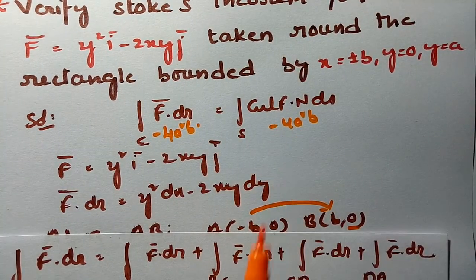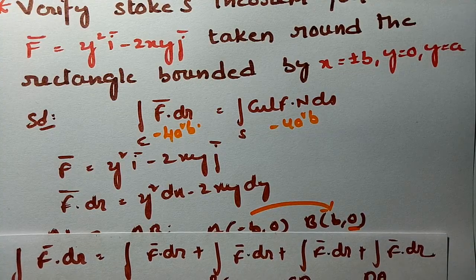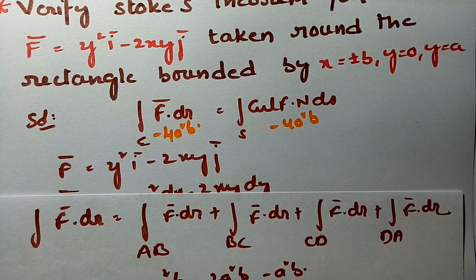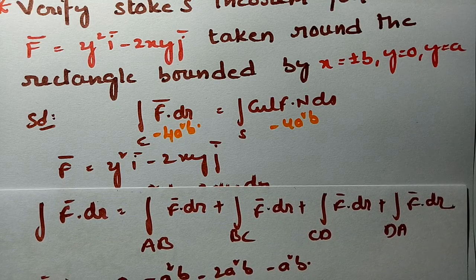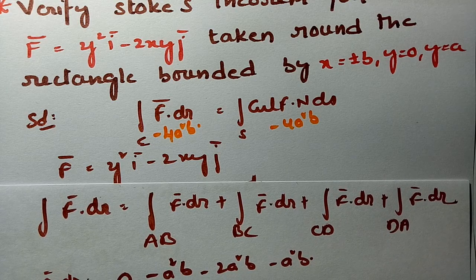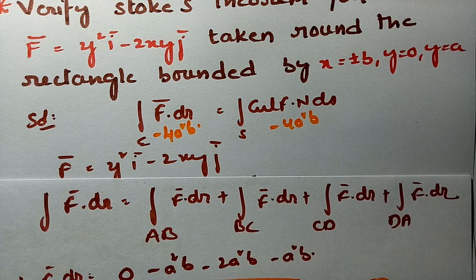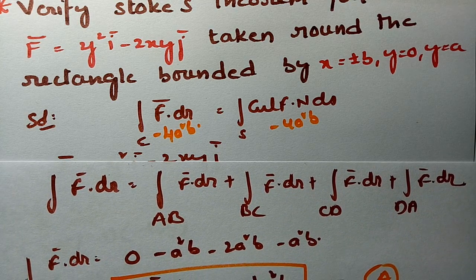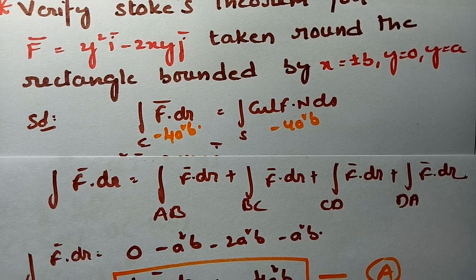From both parts, the line integral ∮ f̄ · dr̄ = -4a²b equals the surface integral of curl f̄ · n̂ ds = -4a²b. Hence Stokes theorem is verified. I hope you all understand — I will keep bringing these videos and helping you. Thank you, and please subscribe and share with your friends.